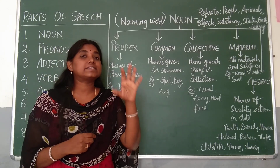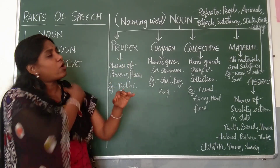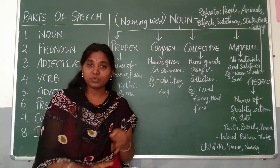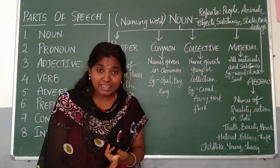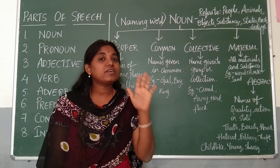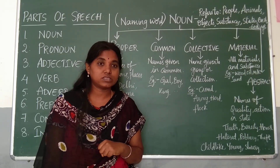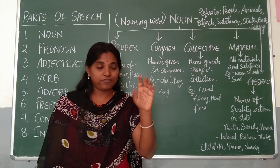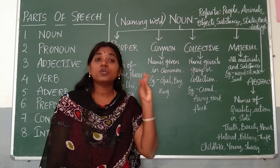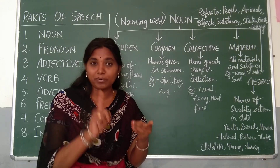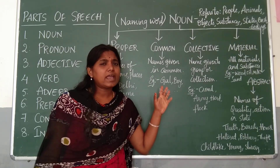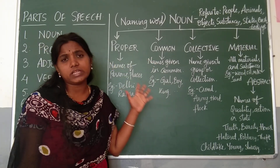Noun is always classified into five parts. Remember five like your five fingers: proper noun, common noun, collective noun, material noun, and abstract noun. These are the five parts of nouns. As the names suggest, so are the definitions — just remember the names and you will understand the meaning.